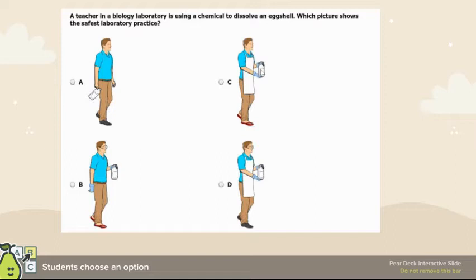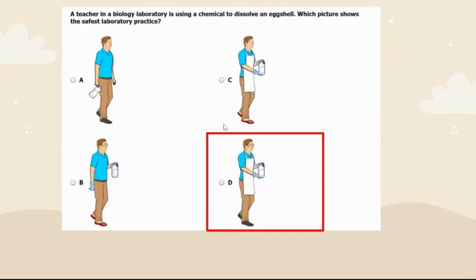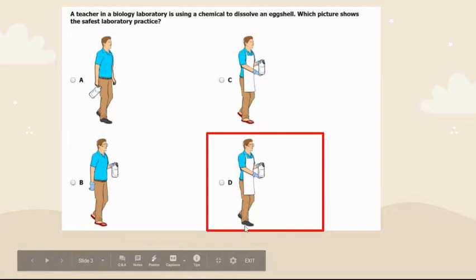C is good except he has open-toed shoes, which is not good. He does have gloves and is carrying with two hands and has an apron, but no goggles. Choice D is the correct answer because it has safety goggles, safety gloves, safety apron, closed-toed shoes, and he's carrying things with both hands.